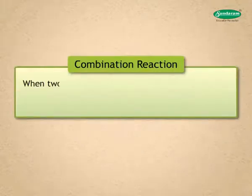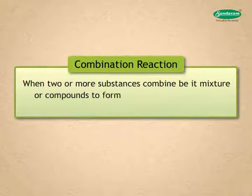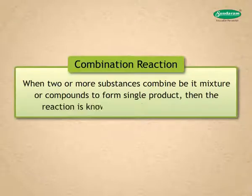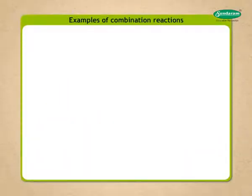When two or more substances combine — be it mixtures or compounds — to form a single product, then the reaction is known as a combination reaction. Let us look at some examples of combination reactions.